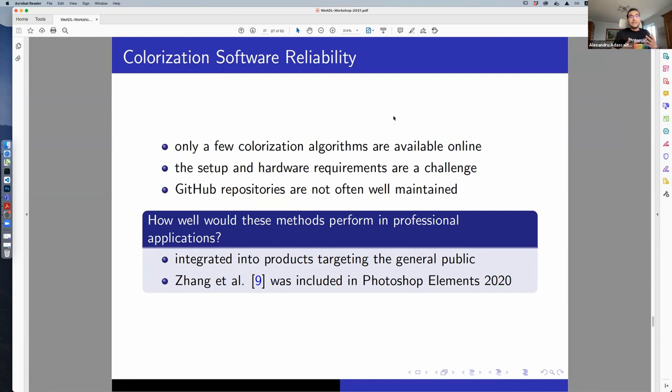These algorithms aren't always reliable, because only a few of them are available online or still available. They were once available, but now they are not there. The setup and the hardware requirements are quite challenging for this task. GitHub repository histories are not often well-maintained, but besides all of these, these methods can be used in professional applications. One of these papers was included in Photoshop Elements 2020.